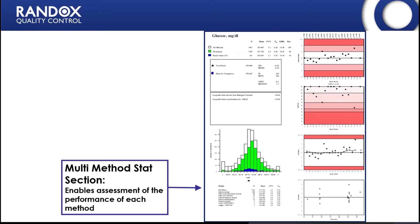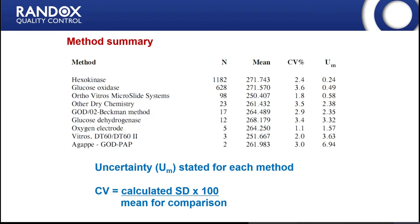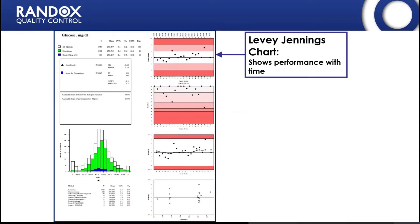At the bottom of the report we have the multi-method statistics section, which enables an assessment of the performance of each method used for this particular test. Any method with a peer group of at least two results will appear in this table. You can see the mean, CV, and uncertainty for each method. The CV is the standard deviation divided by the mean for comparison, multiplied by 100.